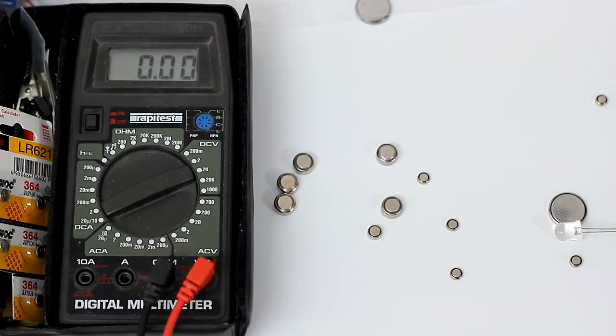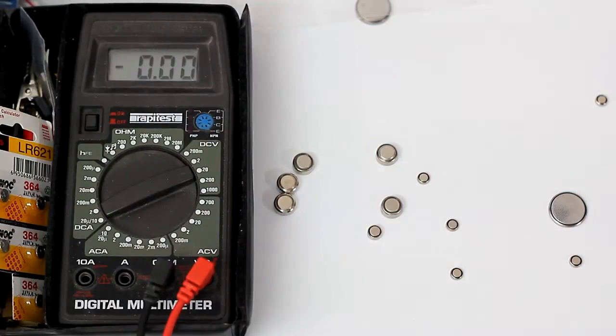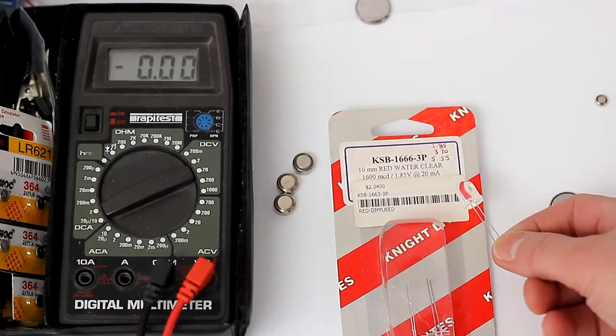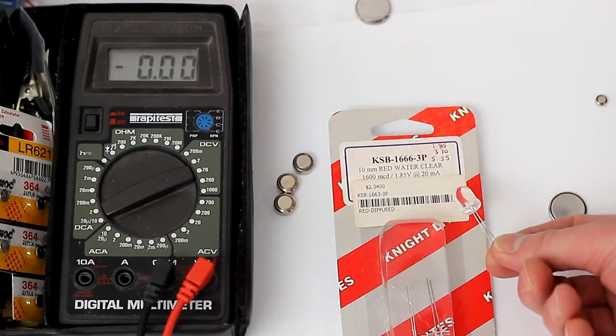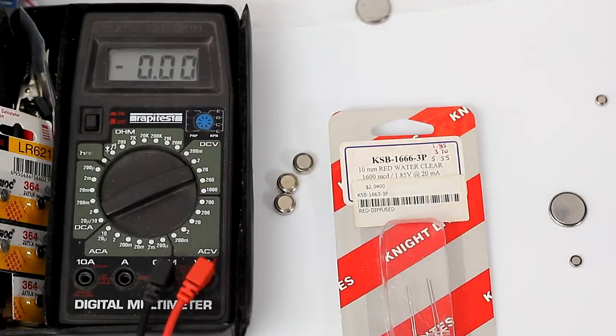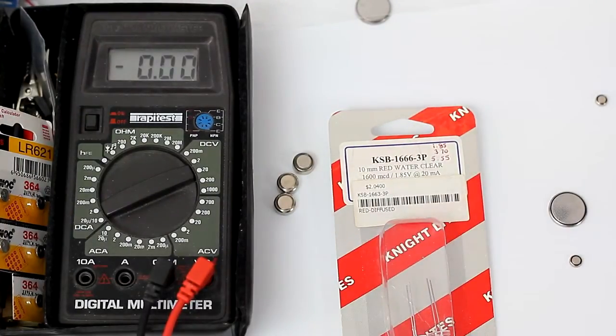You have to have one of the original kind of red LEDs. These are the only ones that will turn on with the low voltage that one button cell has. These are rated at 1.85 volts, but they will just about turn on with 1.5 volts.